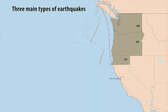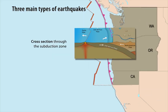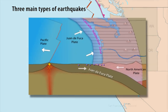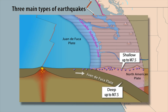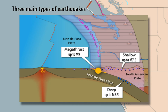In Washington, Oregon, and Northern California, three main types of earthquakes occur for which you may receive an alert: shallow crustal fault earthquakes with magnitudes up to 7.5, deep earthquakes with magnitudes up to 7.5, and megathrust earthquakes with magnitudes up to 9. Every earthquake will have different warning times that depend on location, magnitude, and earthquake type.